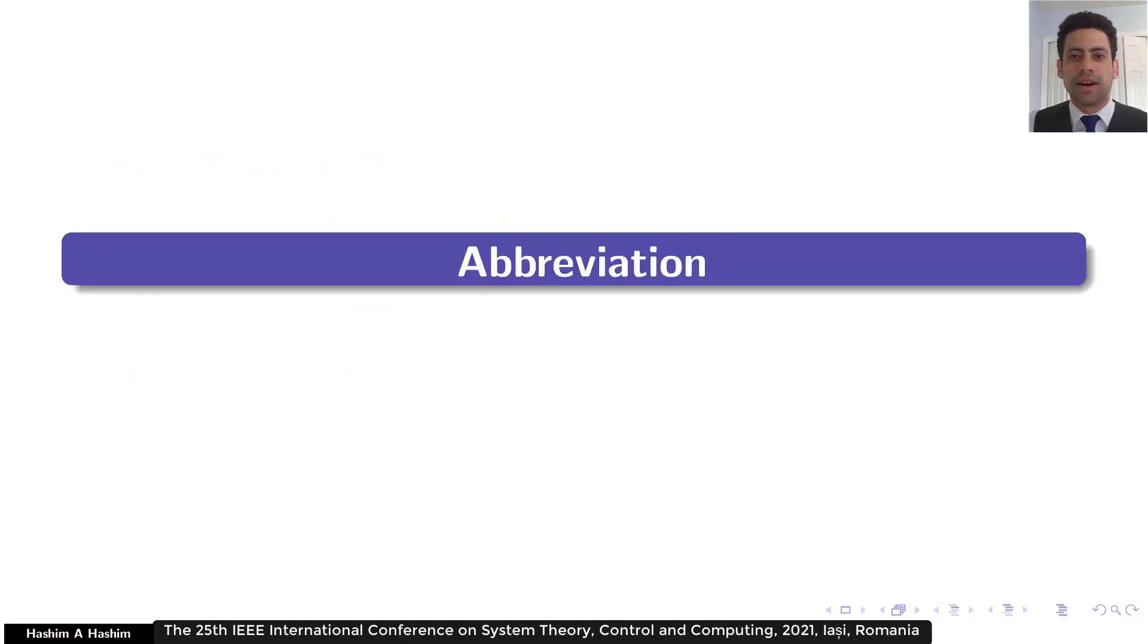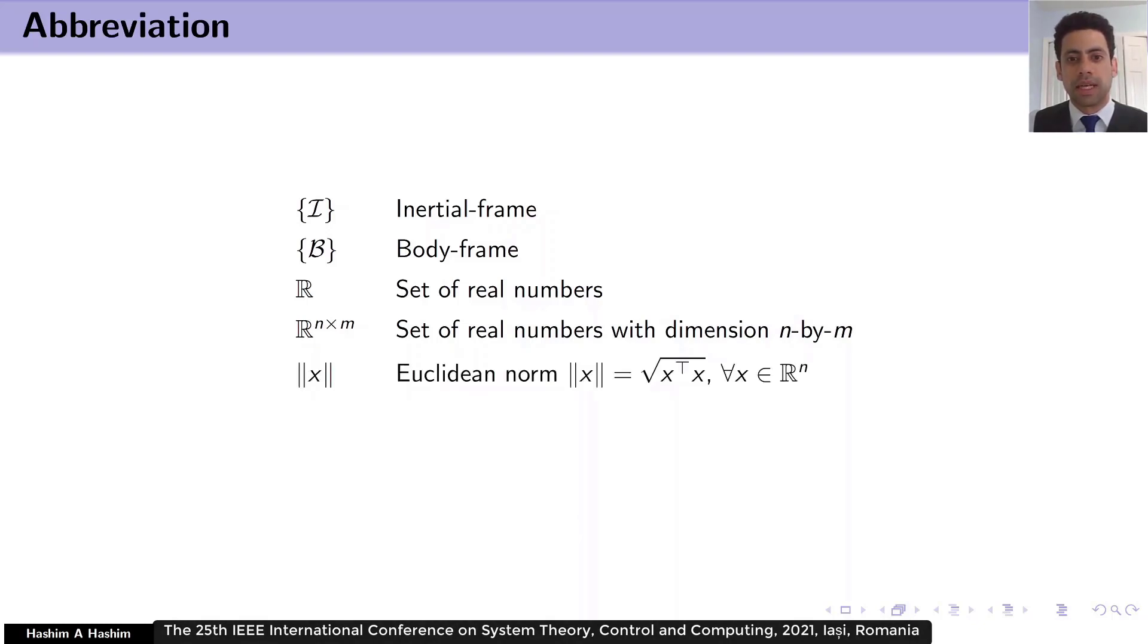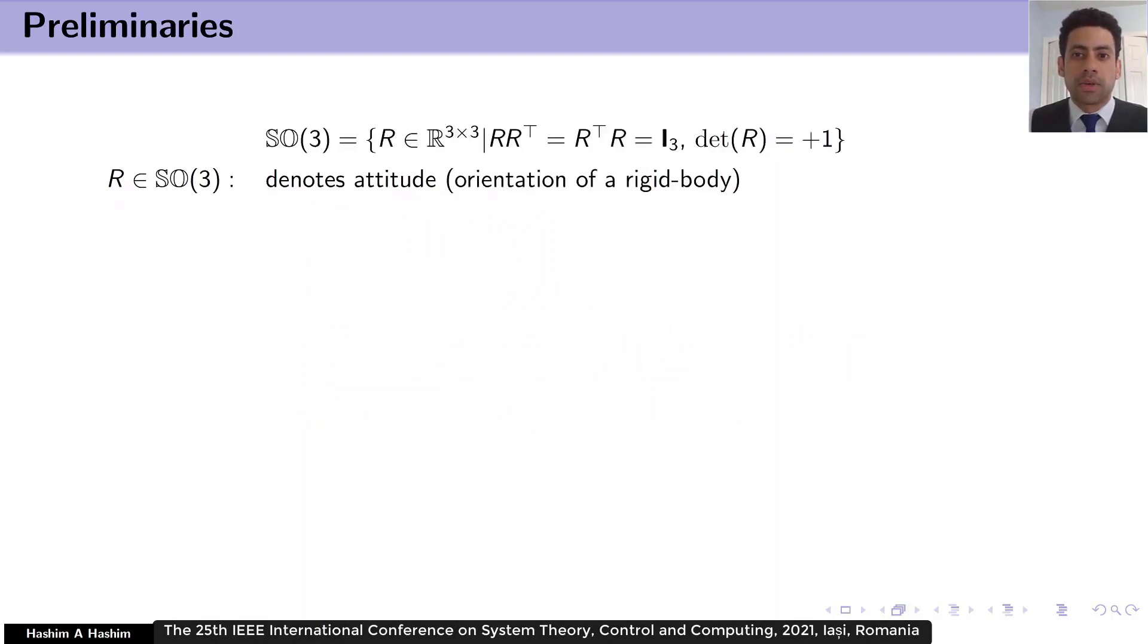In this presentation, I denotes inertial frame, B denotes body frame, R is the set of real numbers, R^n by m is the set of real numbers with dimension n by m. SO(3) is the special orthogonal group of order 3. R belongs to SO(3) denotes attitude, or commonly known as orientation of the rigid body, where the set SO(3) includes matrices 3 by 3, where the matrix in this set, if it's multiplied by its transpose, it is equal to identity, and the determinant of any matrix in this set always equal to positive 1.